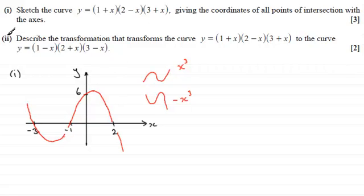Now in part 2, we're asked to describe the transformation that transforms the curve y equals (1 + x)(2 - x)(3 + x) to the curve y equals (1 - x)(2 + x)(3 - x) for 2 marks. So again, you might like to have a go at this, so just give you a moment to pause the video.